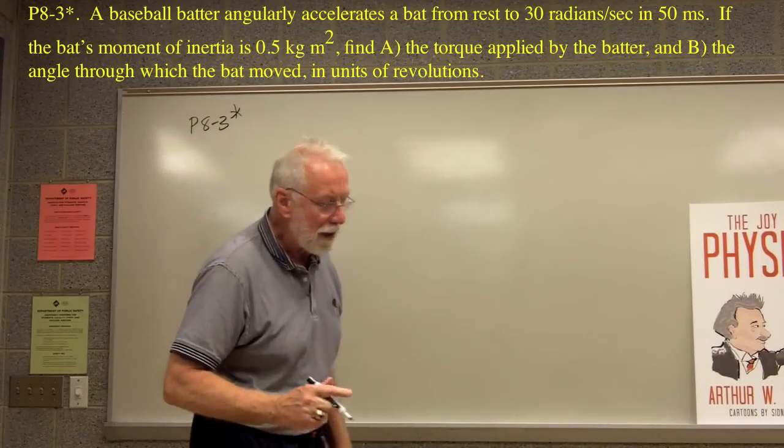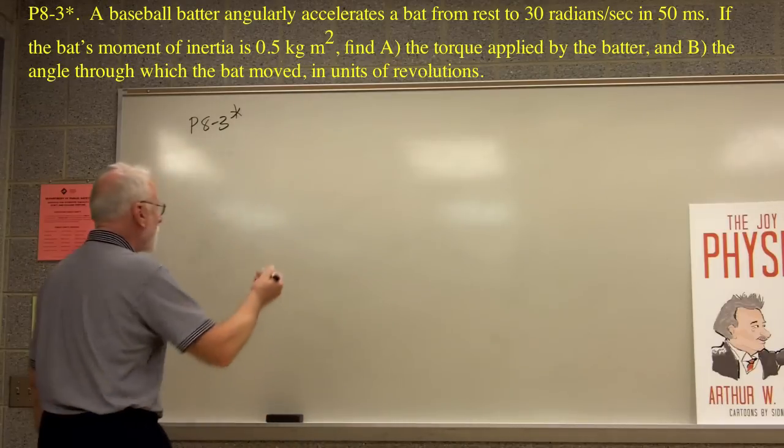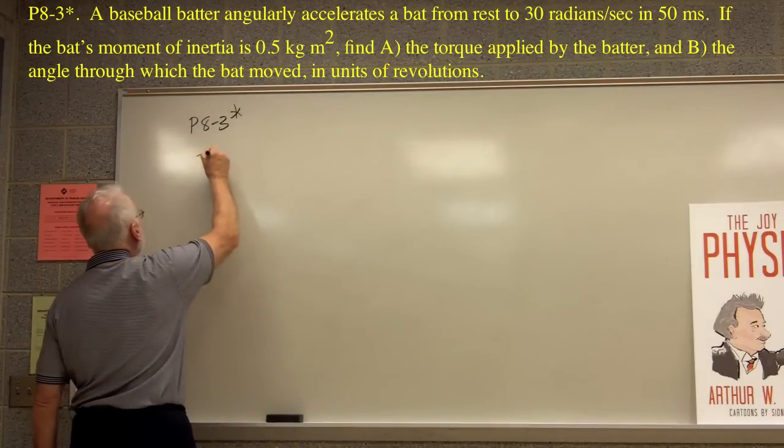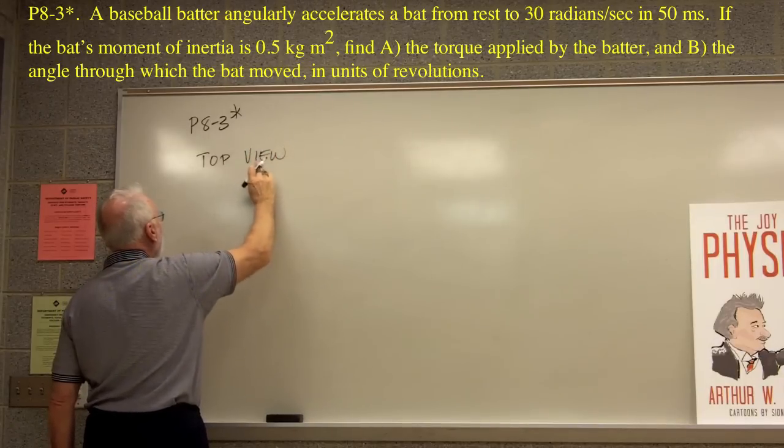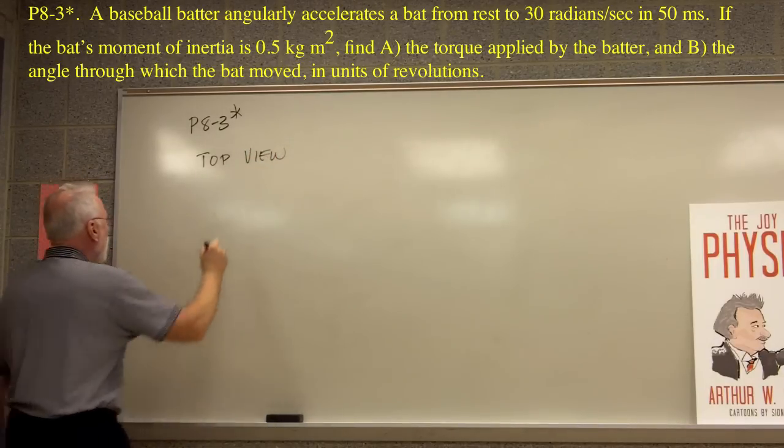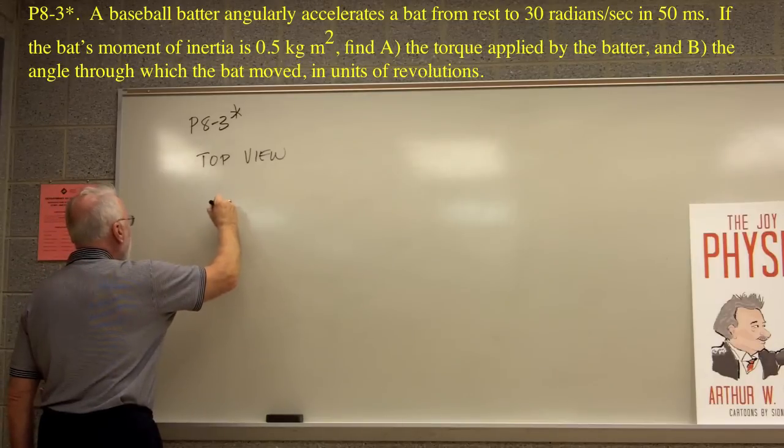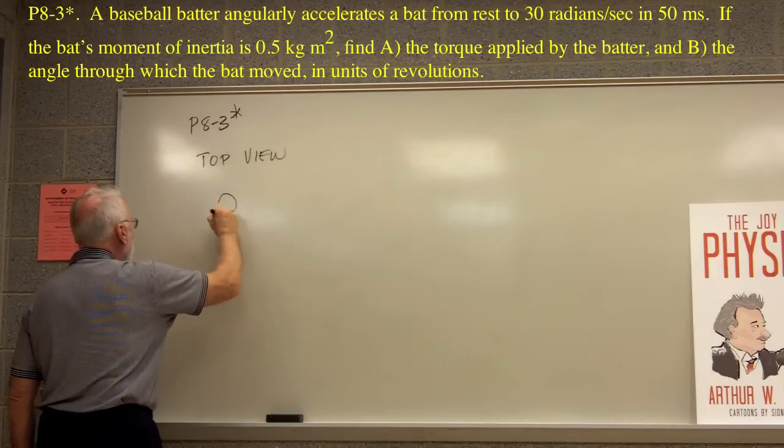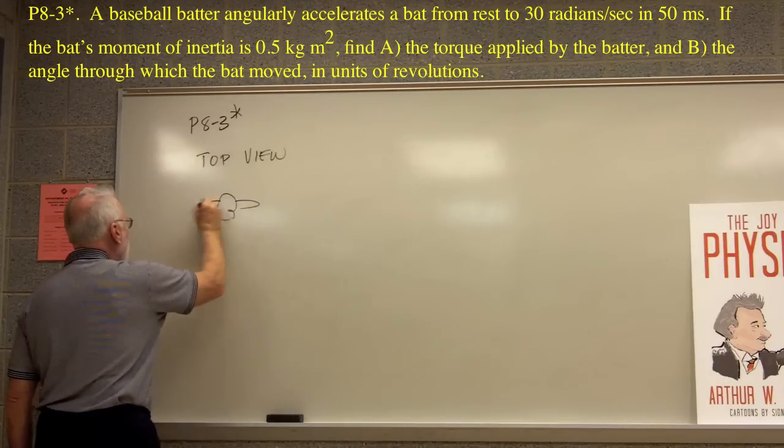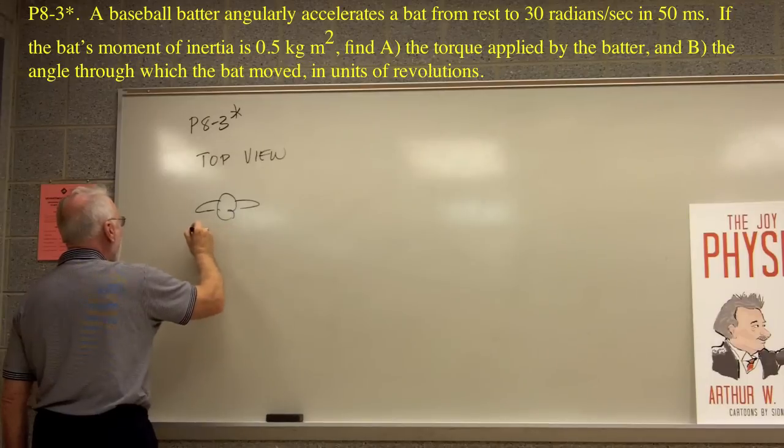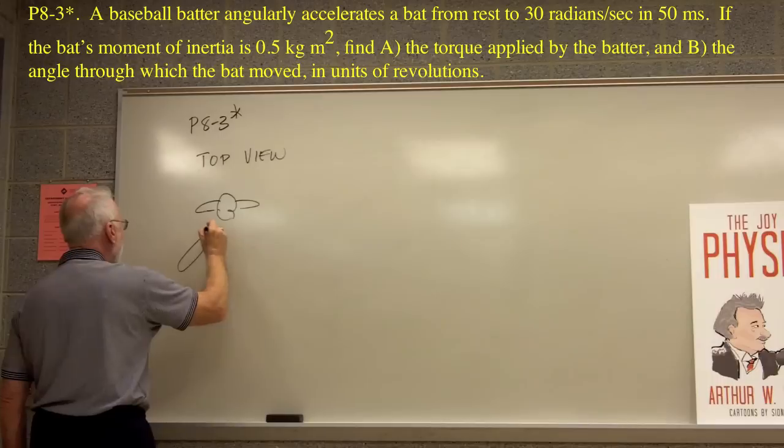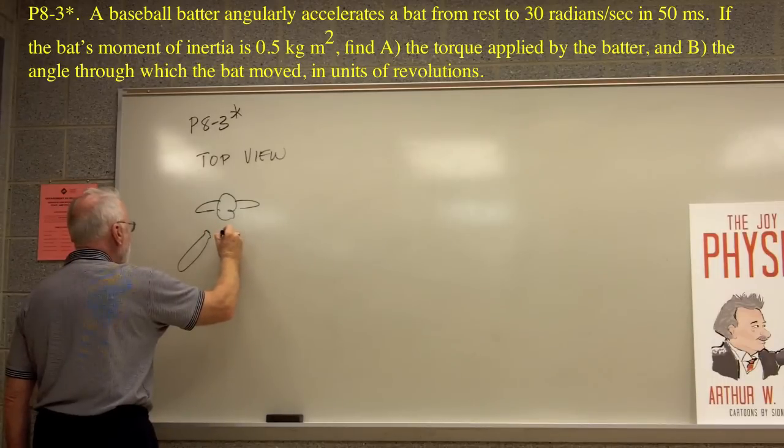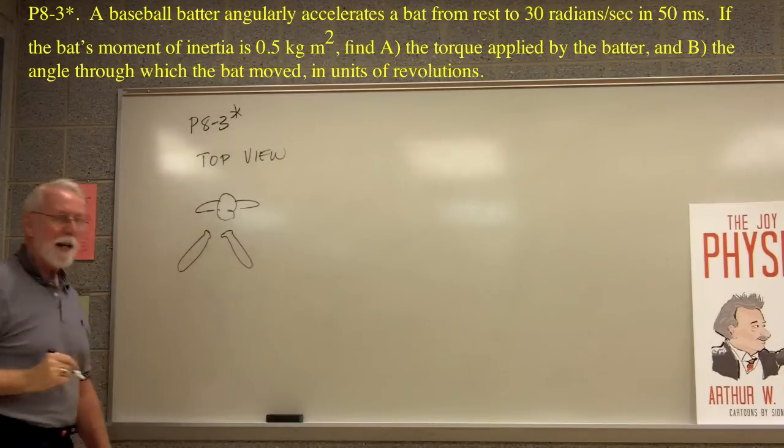A baseball batter angularly accelerates a bat from rest to 30 radians per second in 50 milliseconds. So we have to have a top view picture, always got to have a picture, right? Top view of a baseball player. So here is the baseball player, but all you can see is his helmet like so and his shoulders. And he's swinging a bat, and the bat starts out someplace here and then winds up to be someplace here, like this. He's swinging the bat at the ball.